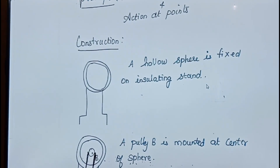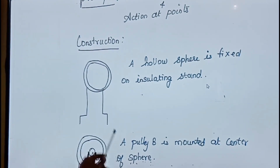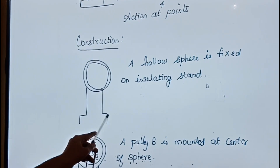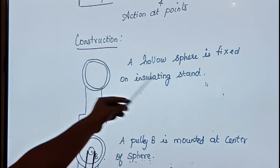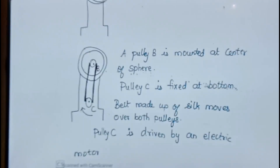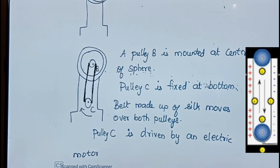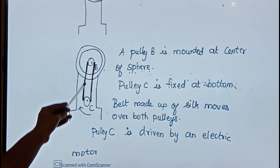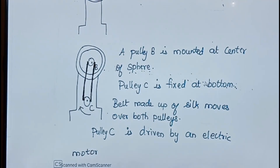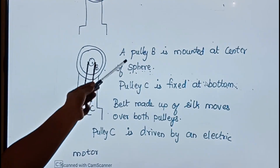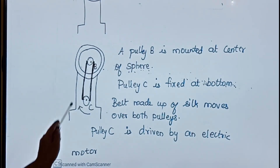Now we are going to see the construction. First, let us consider a hollow sphere which is mounted on an insulating stand. Pulley B is mounted at the center of the sphere, and pulley C is fixed at the bottom.